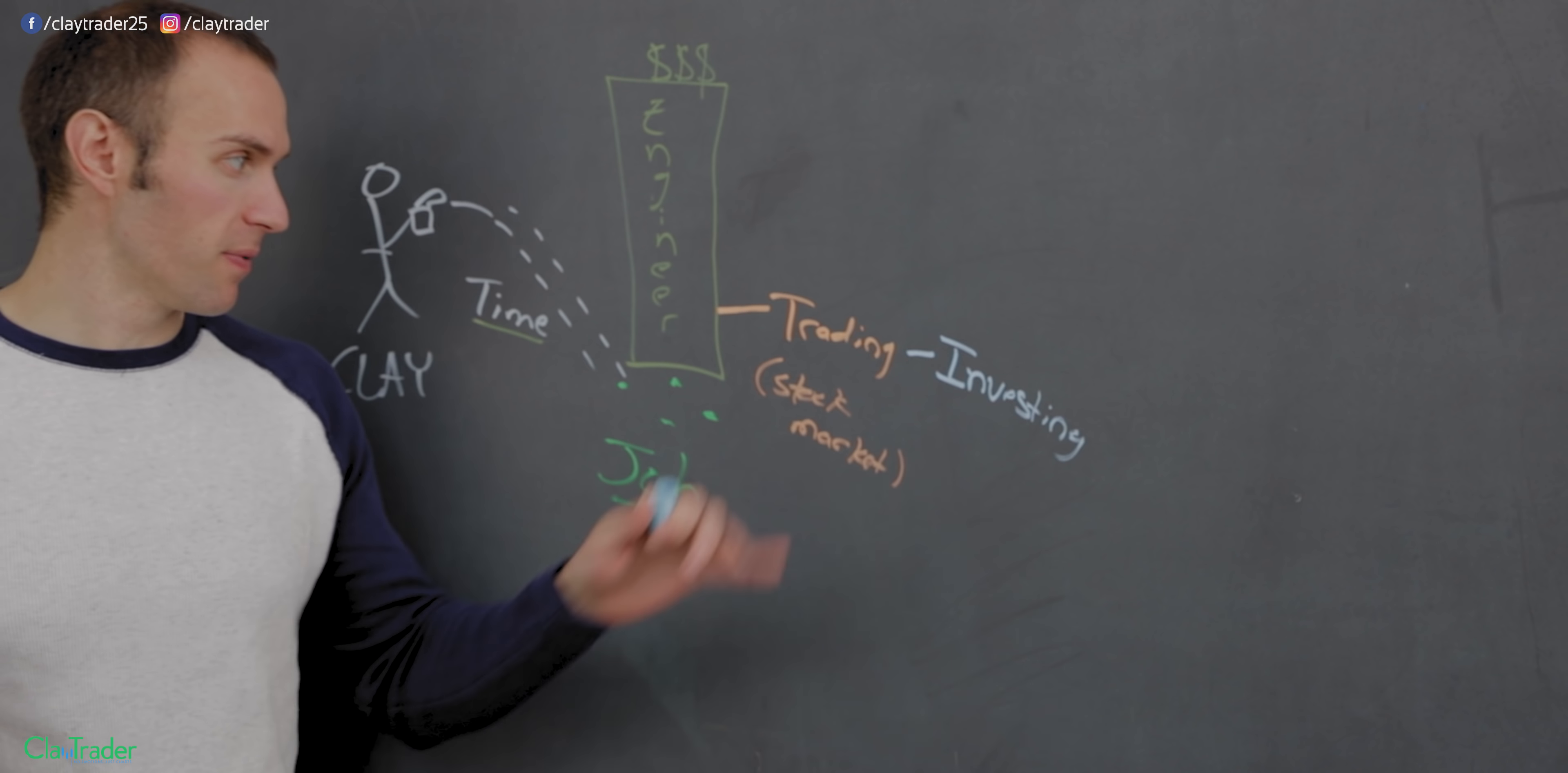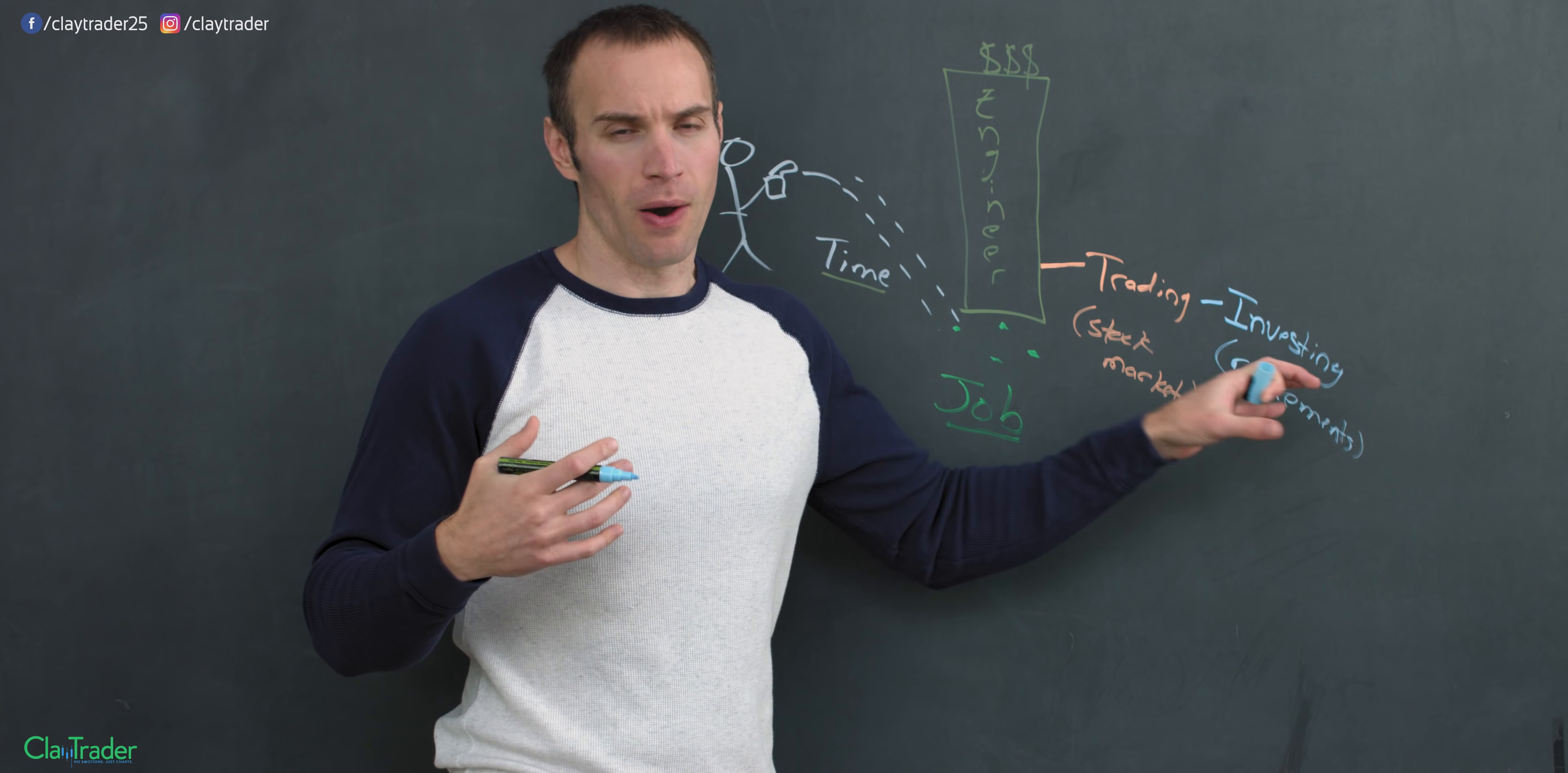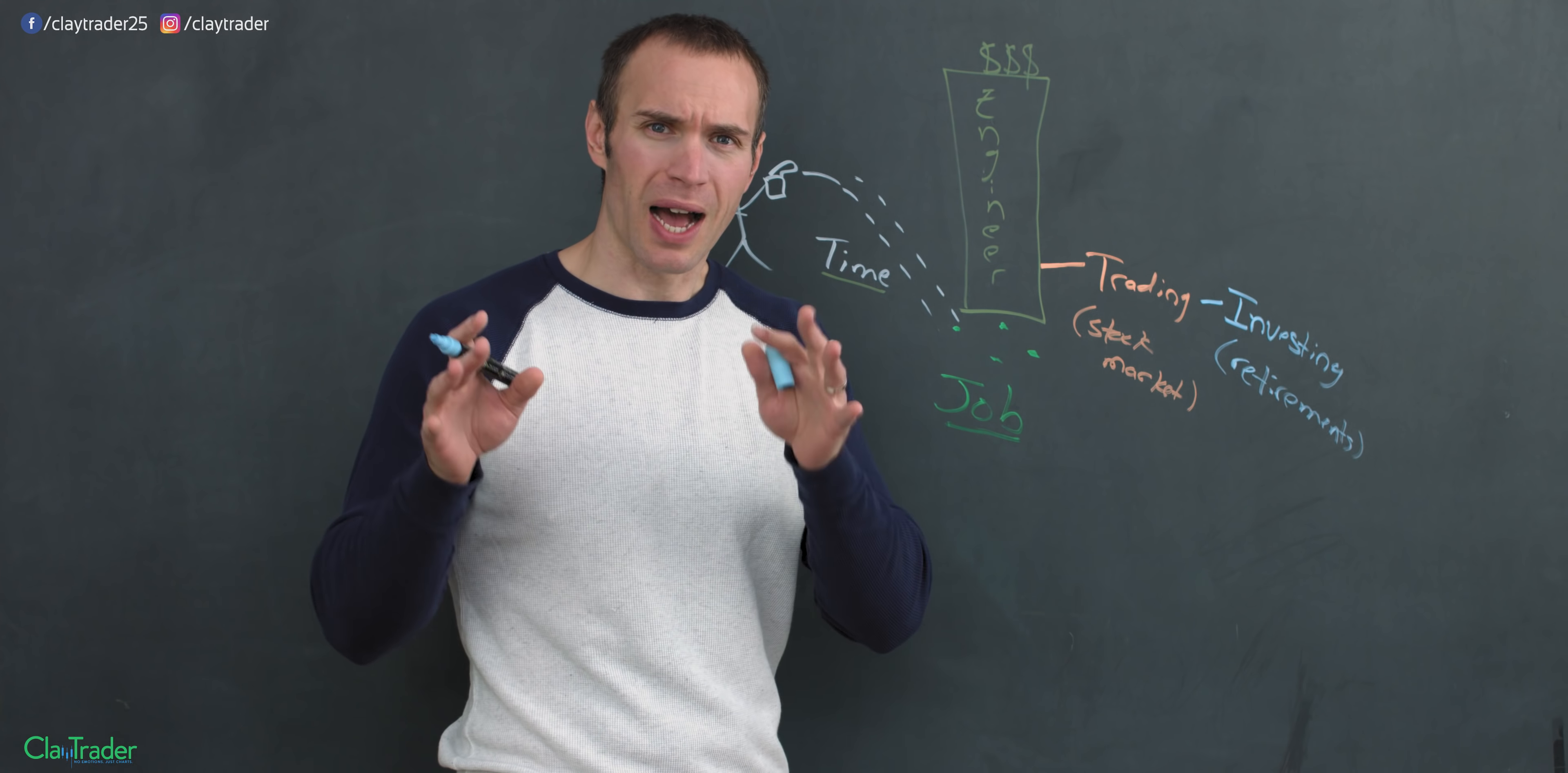So one of the streams of income I have are from trading and investing, two separate forms. Investing very hands-off, trading very active. This would just be from the typical retirement portfolios that I have for myself. Because I have those set up in a certain way, there is money technically coming in every single month. Now, is it a mind-blowing amount? No, I think it's right around $400 to $500 a month. Let's call it $500 a month.